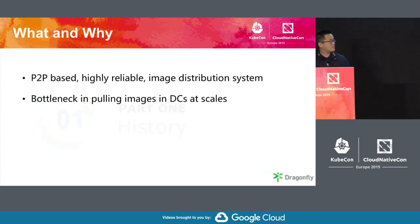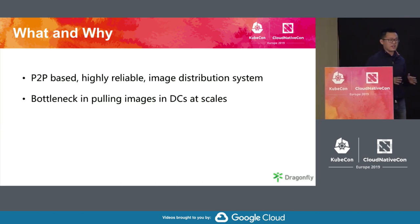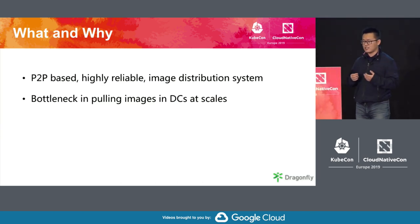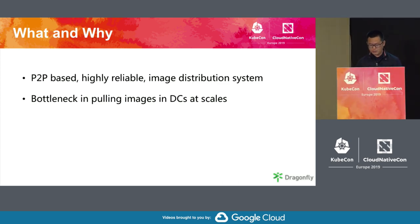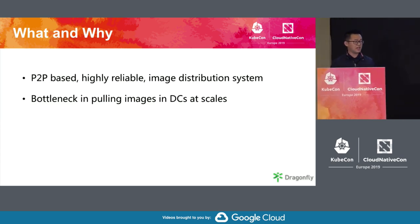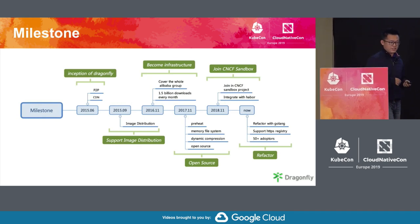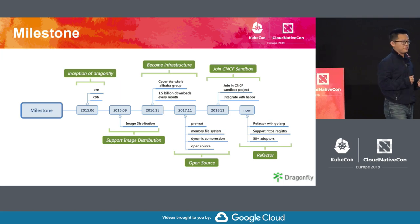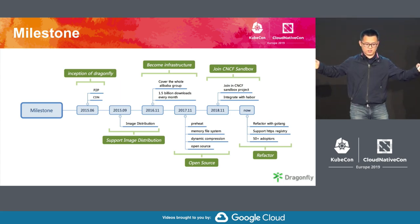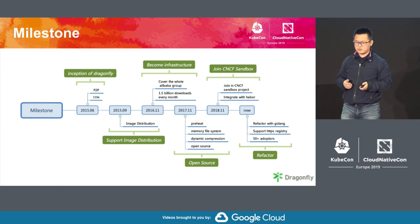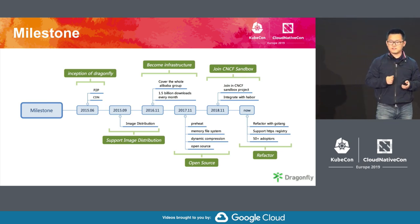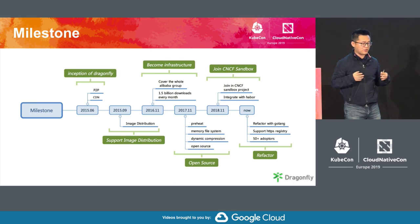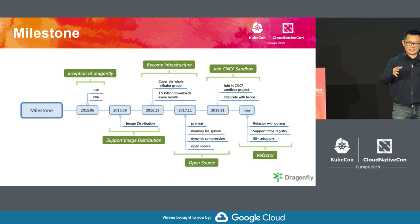Let me introduce the history. Dragonfly is a P2P-based, highly reliable image distribution system. It solves the bottlenecks in pulling images in data centers at scale. Here is the milestone: it was born in 2015. At that time, we tried to distribute files across regions or clusters. We provided two fundamental features — peer-to-peer, and CDN, to cache requested files on a supernode and distribute them among the peer network.